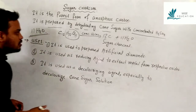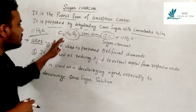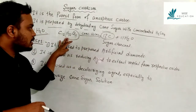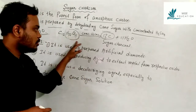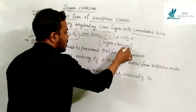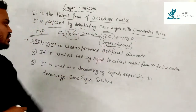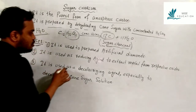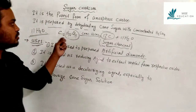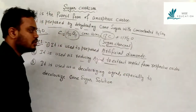In the dehydration of sugar with concentrated H2SO4, 11 molecules of water are removed, leaving behind carbon. When sugar is treated with concentrated H2SO4, the water molecules are removed and the carbon is separated. This is the preparation of sugar charcoal.